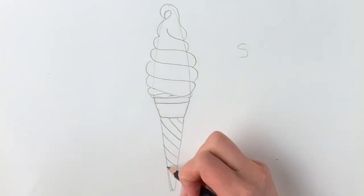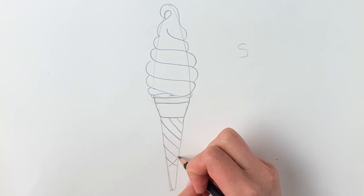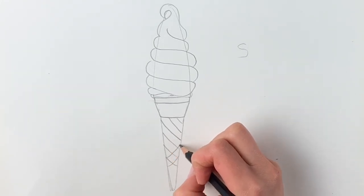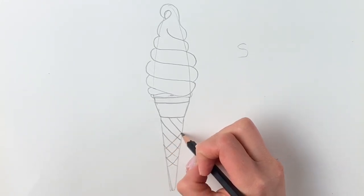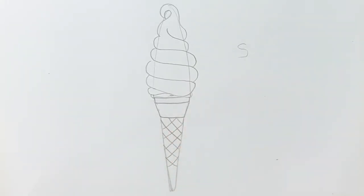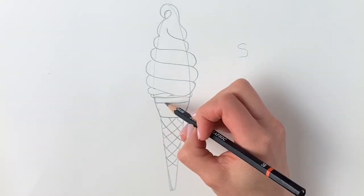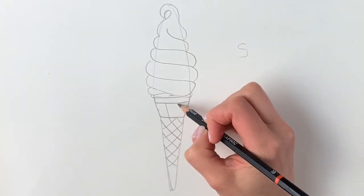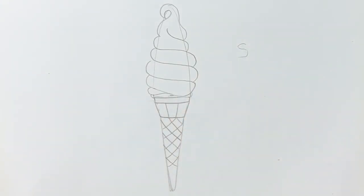Now we're going to be doing some lines in the other direction, up like this. Then we've got two lines coming down here and here.